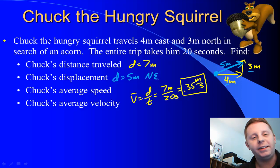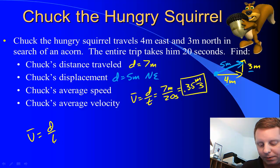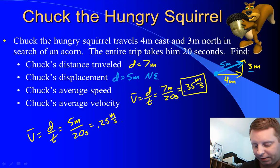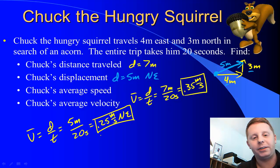And finally, find Chuck's average velocity. Same formula again. V bar equals D over T, but now that D stands for displacement, which was 5 meters northeast in a time of 20 seconds, or 0.25 meters per second northeast. It needs a direction because it's a vector.